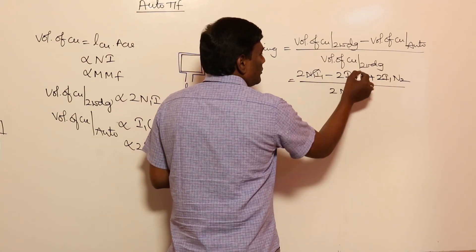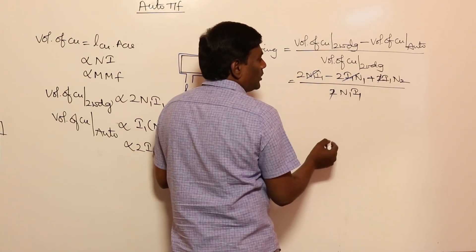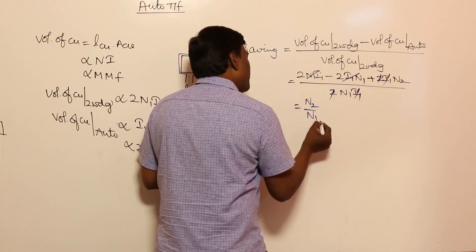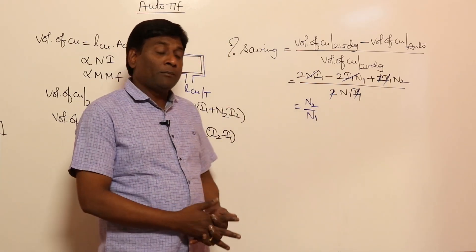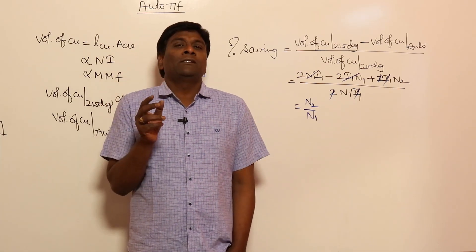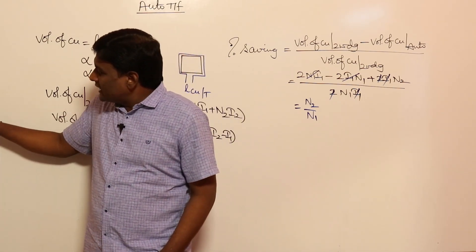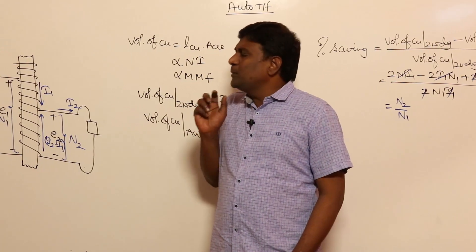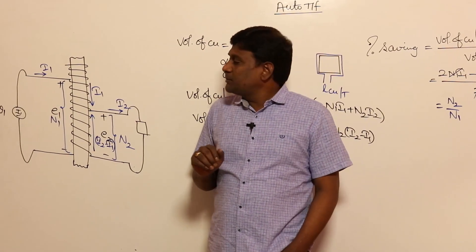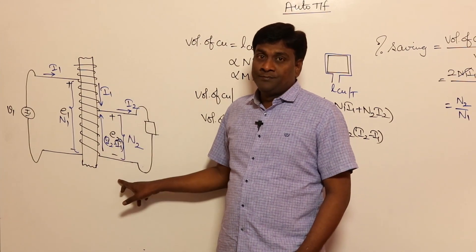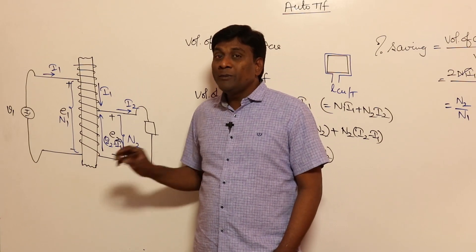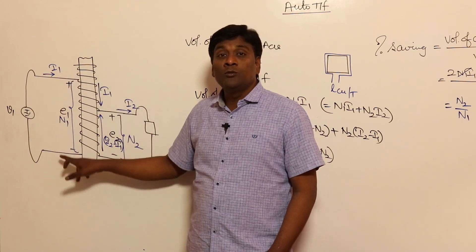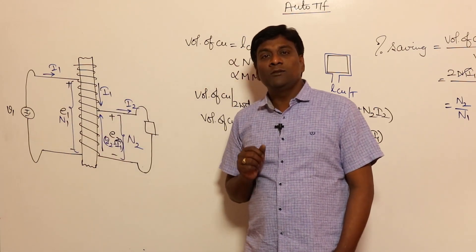So, percentage saving in copper is N2/N1. For example, if input is 100 volts and output is 80 volts, saving is 80/100 = 80%. If output is 90 volts and input is 100 volts, saving is 90/100 = 90%. If input and output are both 100 volts, N2/N1 = 1, meaning 100% saving — no transformer is needed.